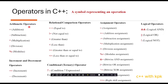Let's look at the first category of operators. You have the arithmetic operators, which basically includes addition, subtraction, multiplication, division, and modulus. In C++ you represent these as: addition uses a plus sign, subtraction uses the dash sign, multiplication uses the star, division uses the forward slash, and modulus uses the percentage sign.